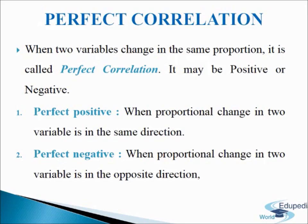Let's take an example: x values are 1, 2, 3, 4, and 5, and the values of y are 5, 10, 15, 20, and 25. You can see that the values are increasing in a positive manner.